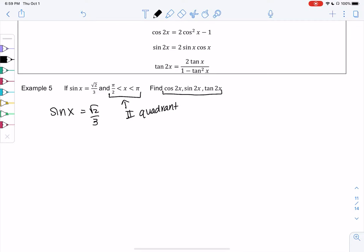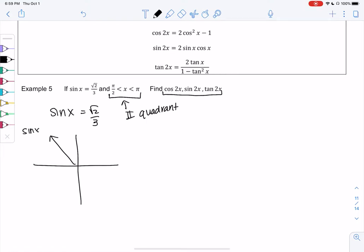That'll be useful to tell us the sine of cosine. So it's somewhere over here. So in this quadrant, sine x is positive, which makes sense. Cosine x will be negative.